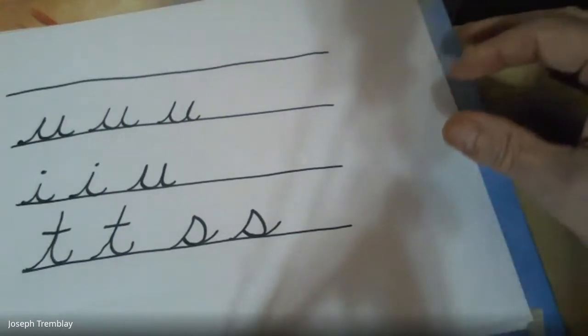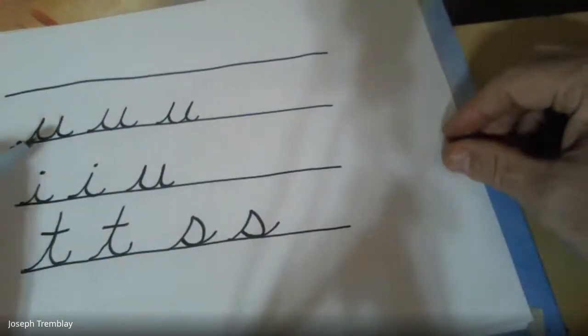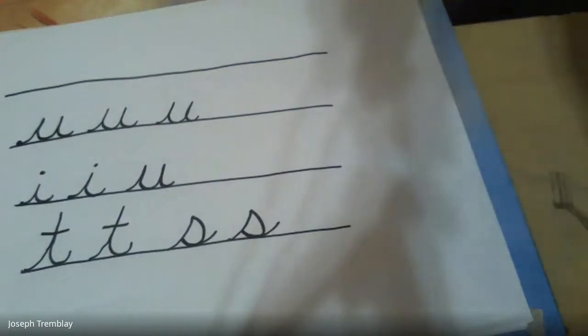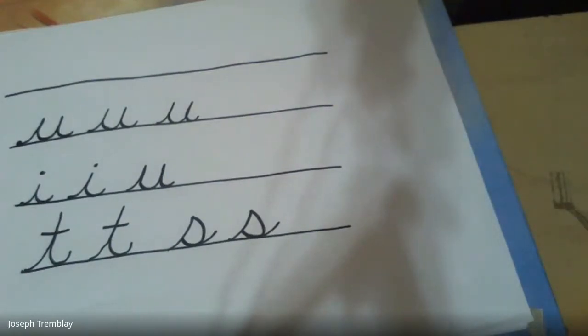So really, we now have four letters: the U, the I, the T, and the S. All right. Well, that's our video for this morning. Have a nice day, and keep on writing.